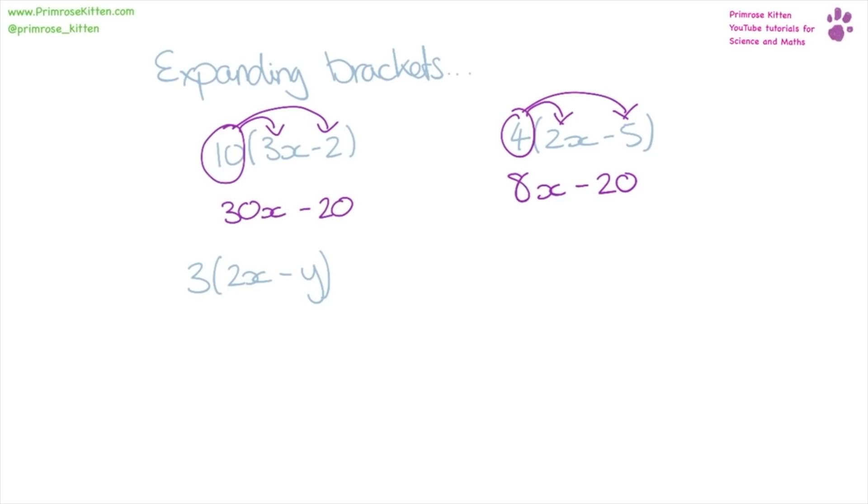Take the 3, which is outside the brackets, expand it by everything that is inside the brackets. So 3 times 2 gives us 6x minus 3y.